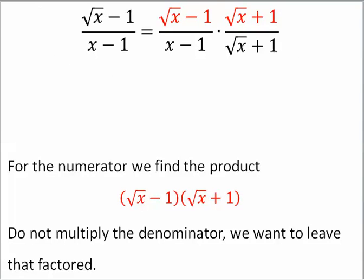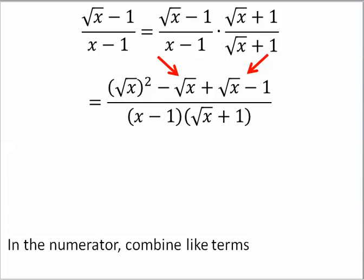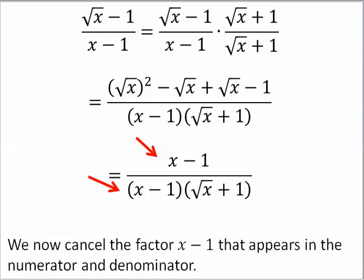For the numerator, we find the product radical x minus 1 times radical x plus 1. Do not multiply the denominator. We want to leave that factored. In the numerator, combine like terms.